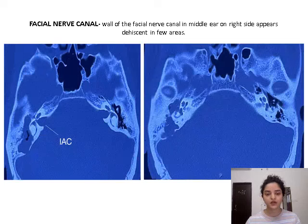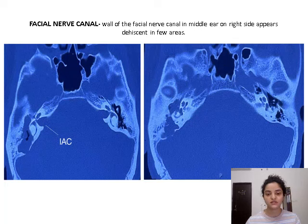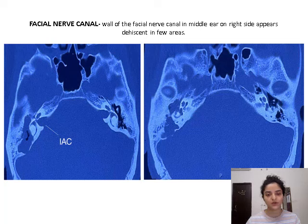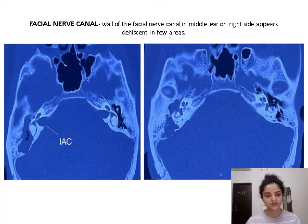Facial nerve canal: The wall of the facial nerve canal in the case of cholesteatoma, as seen in this image, appears dehiscent in few areas on the right side, which can be very well appreciated when compared to the left facial nerve canal. The tympanic segment of the facial nerve is very much intact on the left side, whereas it is lost on the right side.